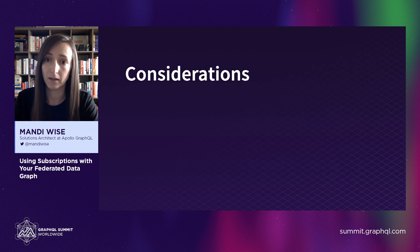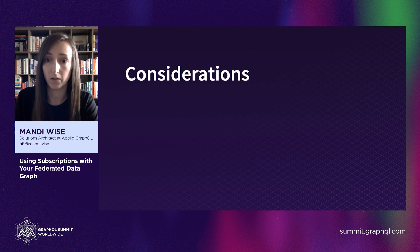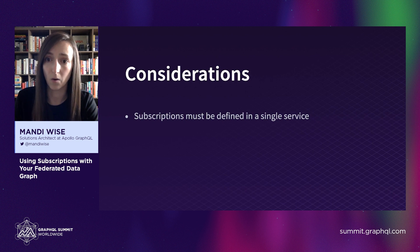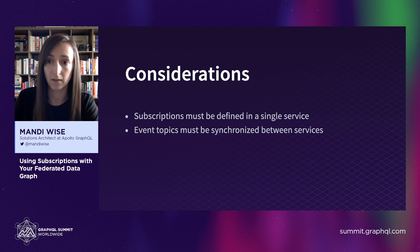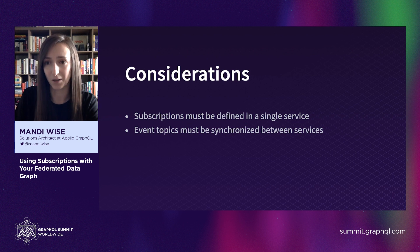To wrap up, let's cover some considerations and cross-cutting concerns to keep in mind. First, this solution requires all subscription fields to be defined in a single decoupled subscription service, so that may necessitate shared ownership across teams that manage independent portions of the schema. Second, some level of coordination would be necessary to ensure that event labels, such as the post-added label, are synchronized between the subgraphs that publish events and the subscription service that calls the async iterator method with these labels as arguments, because breaking changes may occur without such coordination.